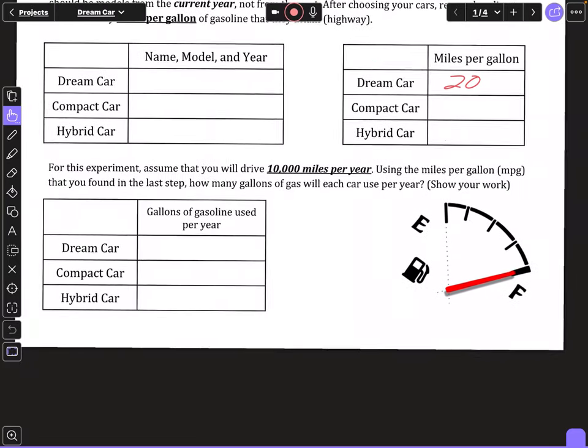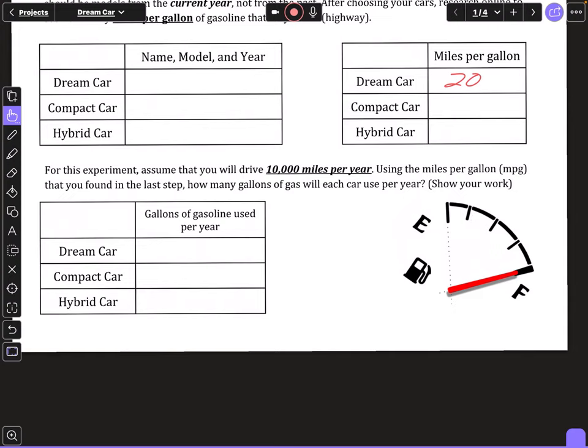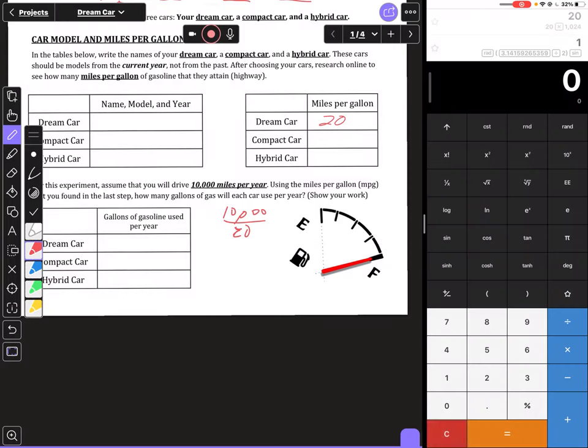Let's say my dream car gets 20 miles per gallon - make sure you use your number, this is just hypothetical. Next, figure out the gallons of gasoline used per year. Assume that you'll drive 10,000 miles per year. Using the miles per gallon, calculate how many gallons each car will use per year. If you get 20 miles per gallon and you're going to drive 10,000 miles per year, take 10,000 and divide it by the miles per gallon. So 10,000 divided by 20 means my dream car will use 500 gallons per year.